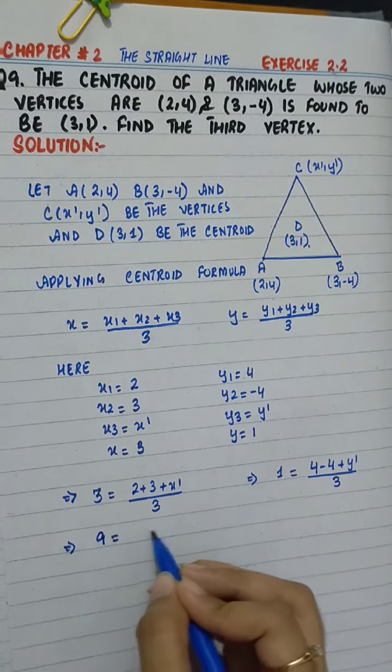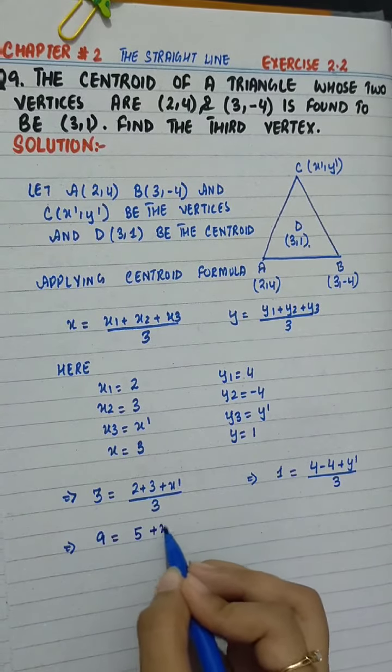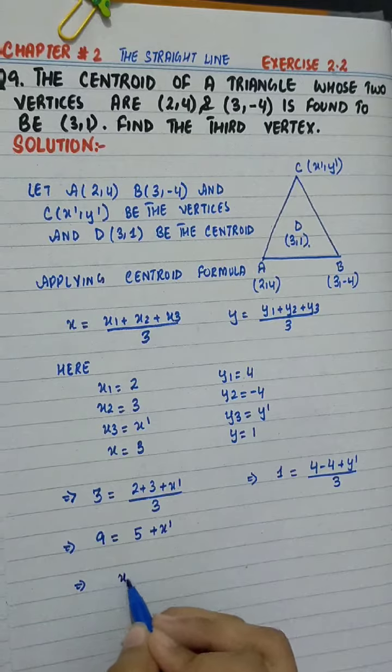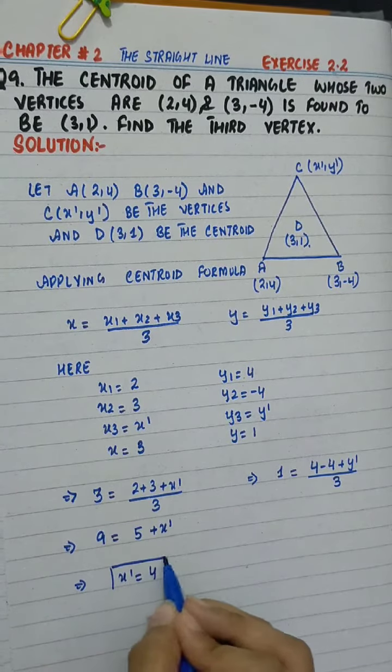Cross multiplying: 9 = 5 + x', so x' equals 4.